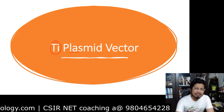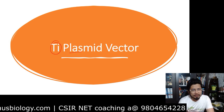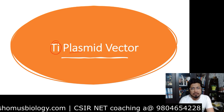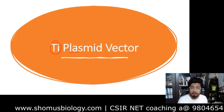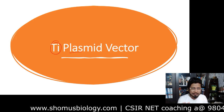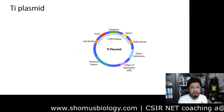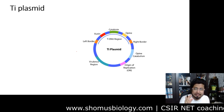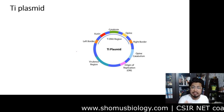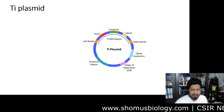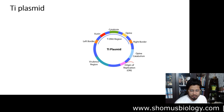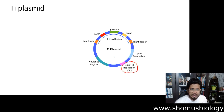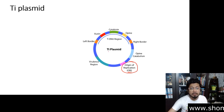Ti plasmid is a naturally occurring plasmid in Agrobacterium tumefaciens bacteria. This is not a hybrid vector - it is a naturally occurring vector. There are some advantages and some disadvantages. We'll get rid of the disadvantages and use the Ti plasmid as a vector of our choice to deliver a gene of interest inside the target eukaryotic plant cell. Like any other plasmid, it carries an origin of replication known as the ori region.